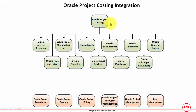The invoices could be for items purchased via Oracle Purchasing module, contractor payments against the time spent on the project, expense payments, or any other miscellaneous purchases and invoices in Oracle Payables. Then you have Oracle Assets.